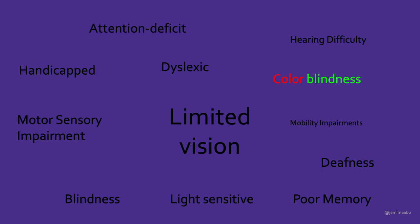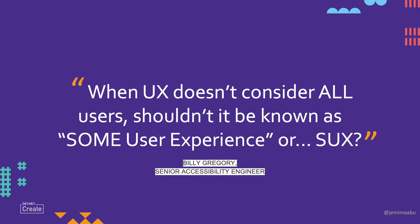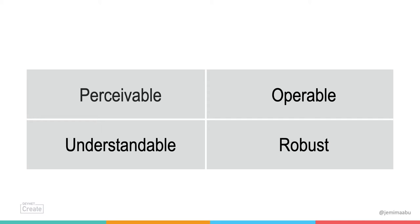Now we're going to go into the principles of accessible design. There's this quote — it's kind of funny: when UX doesn't consider all users, should it be known as 'some user experience' or 'sucks'? Basically, if your user experience does not consider everyone using your product, then it sucks. There are four main principles of accessible design that we're going to cover, and they represent high standards of accessibility.